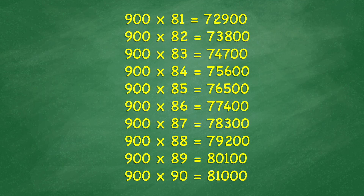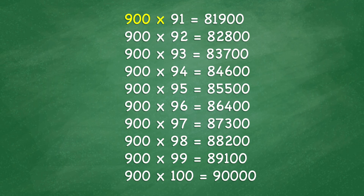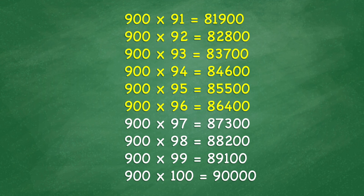900 times 91 equals 81,900. 900 times 92 equals 82,800. 900 times 93 equals 83,700. 900 times 94 equals 84,600. 900 times 95 equals 85,500. 900 times 96 equals 86,400. 900 times 97 equals 87,300. 900 times 98 equals 88,200.